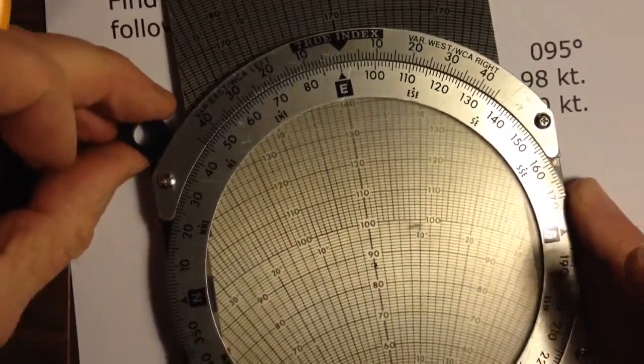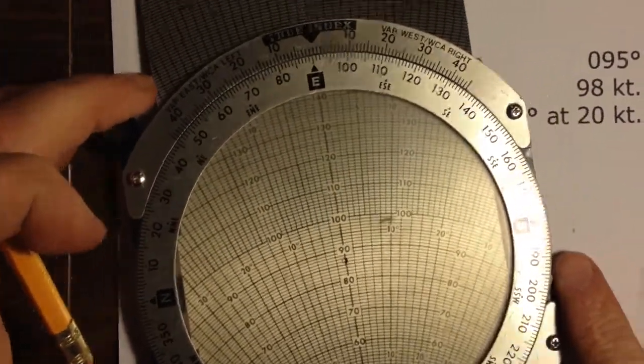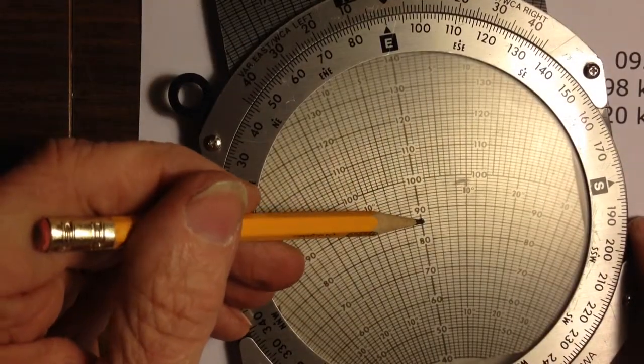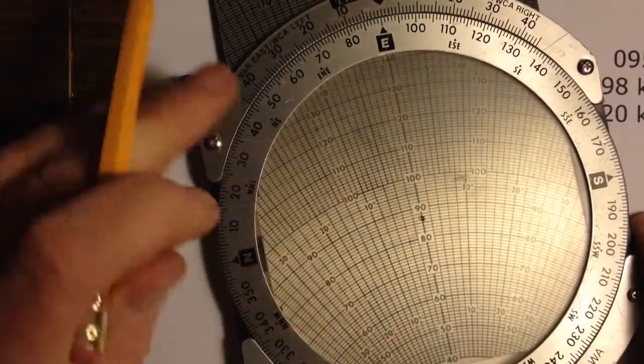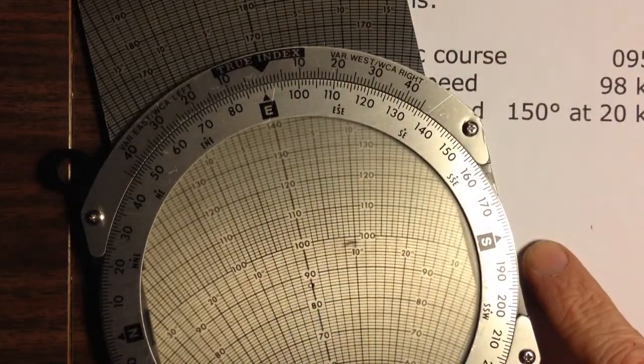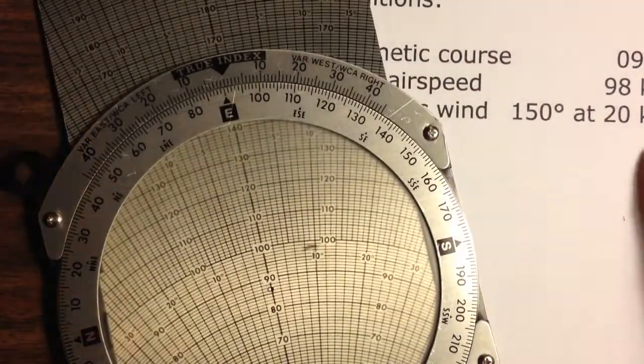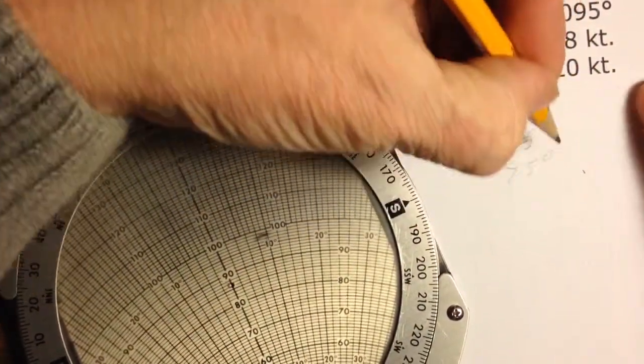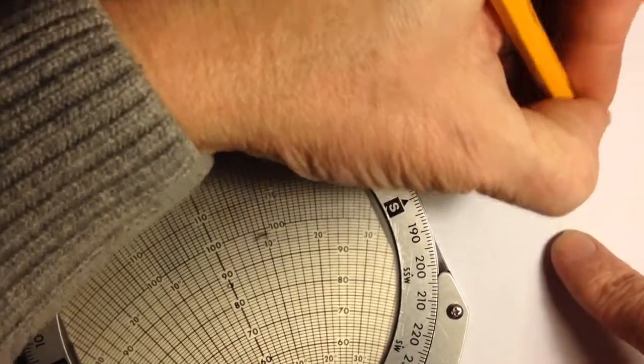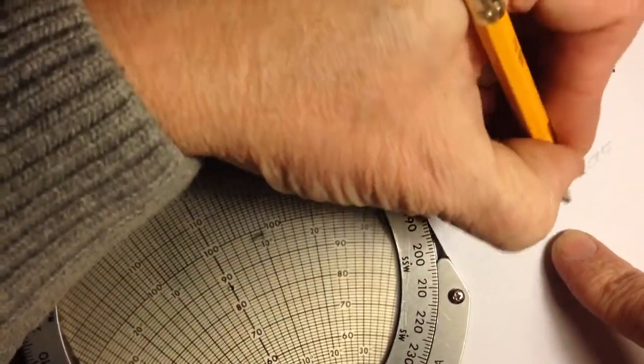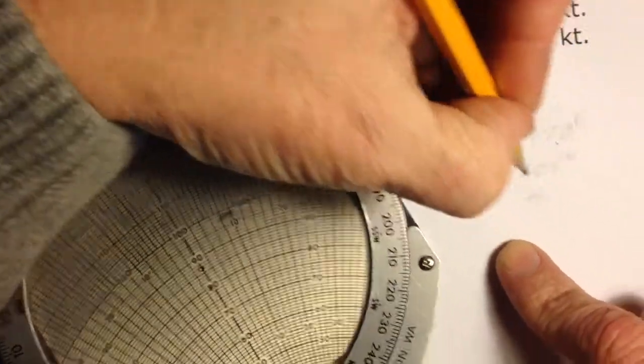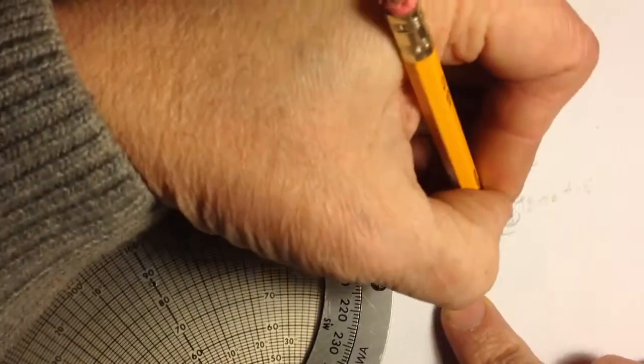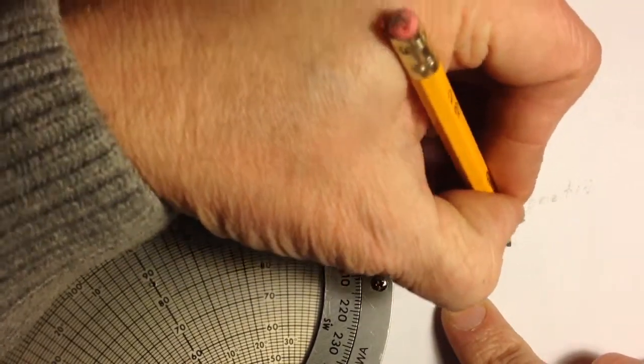So now, to find out what my ground speed is, I look at the dot. The dot says my ground speed is about 85 knots, and the course correction I should steer is 10 degrees to the east of my magnetic course. So 95 degrees plus 10 degrees course correction equals 105 degrees magnetic at 85 knots.